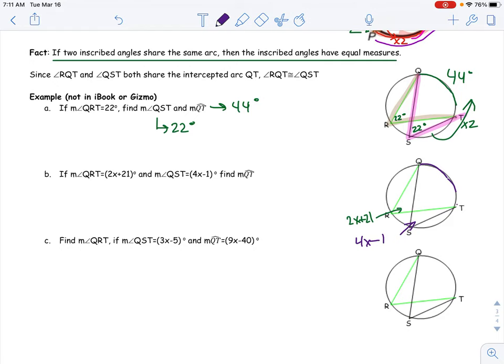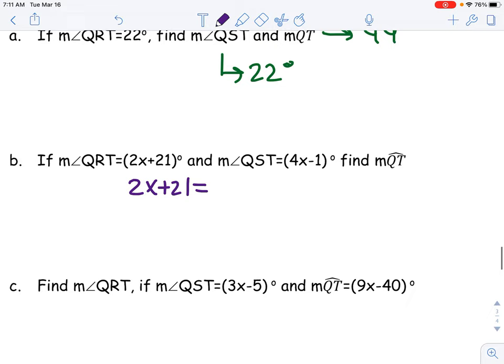We know that they both intercept QT, so I can mathematically legally set them equal to each other. They're going to have the same measure, so let's just set them equal to each other and see what happens. Remember, we must get the x's on one side.